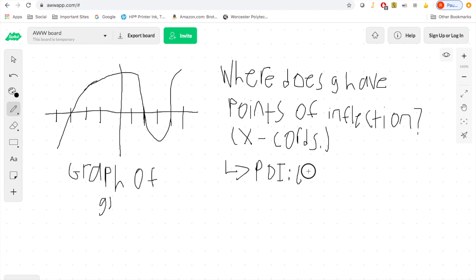Points of inflection occur where concavity changes. So what I mean by that is we learned about concave up and concave down, that's what I mean by concavity, and so when we ask where does g have points of inflection I mean where does g experience concavity changes.